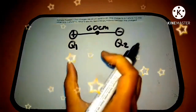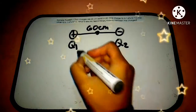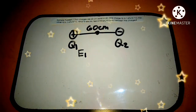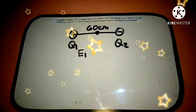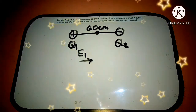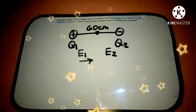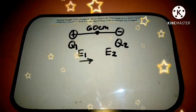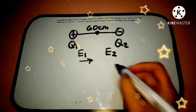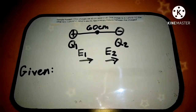We have a test charge midway between the two charges. Let's identify the direction of the electric field. For E1, since Q1 is a positive charge, the electric field it creates points outward — so it will be to the right. For E2, since Q2 is a negative charge, the electric field lines point inward — so it is also to the right.